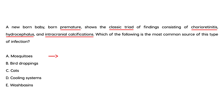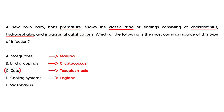Let's go through the answer choices. Mosquitoes cause malaria. Bird droppings can cause cryptococcus neoformans, which can cause meningitis. Cats can cause toxoplasmosis — the correct answer for this question. Cooling systems are associated with Legionella pneumonia. And wash basins are known to be associated with Pseudomonas aeruginosa. So the correct answer is choice C, which is cats.